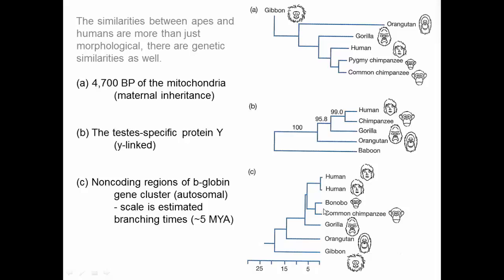Humans and chimps are what are called sister taxa — most closely related to each other. If you include both chimp species, the chimps are sister taxa to each other and then related to humans. We can also date the time of this divergence using a molecular clock, as discussed in the molecular evolution section.